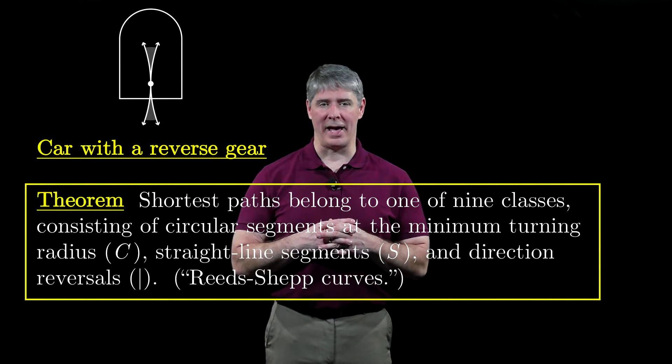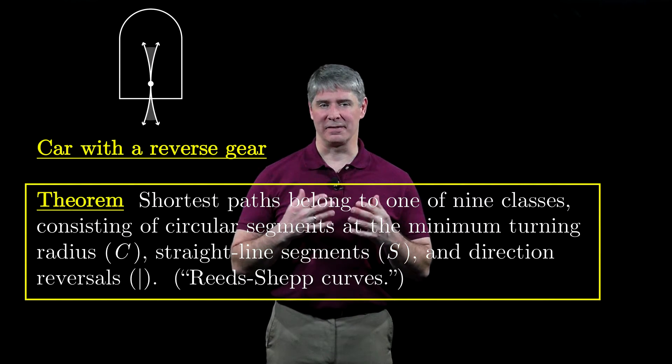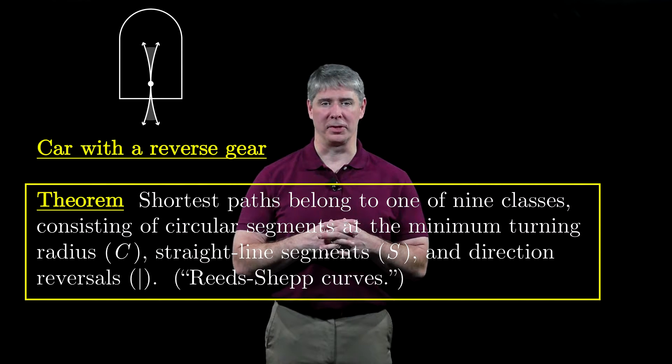Now let's consider a car with a reverse gear. A result due to Reeds and Shep says that all shortest paths belong to one of nine classes of paths consisting of circular segments at the minimum turning radius.